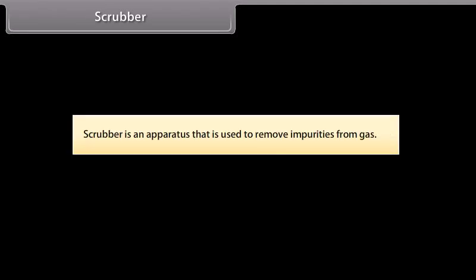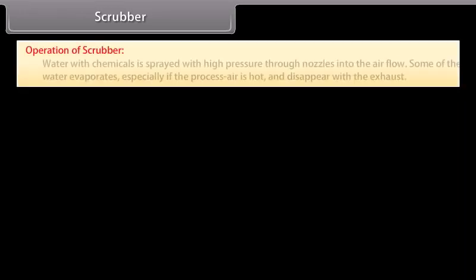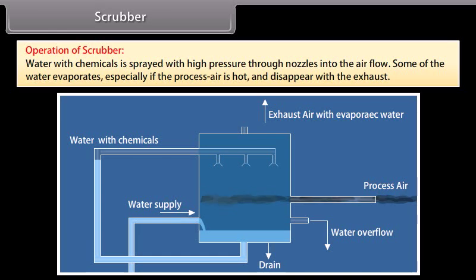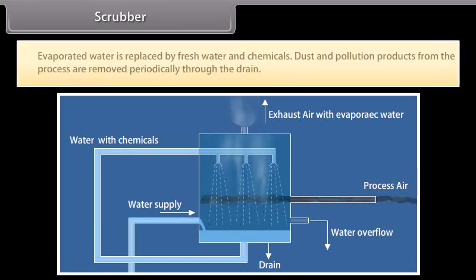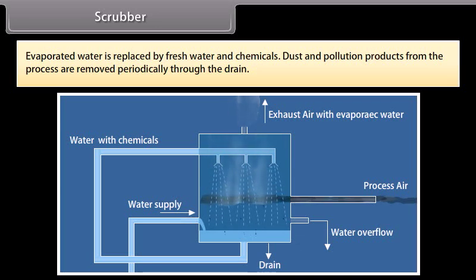A scrubber is an apparatus used to remove impurities from gas. Water with chemicals is sprayed at high pressure through nozzles into the air flow. Some of the water evaporates, especially if the process air is hot, and disappears with the exhaust. Evaporated water is replaced by fresh water and chemicals. Dust and pollution products from the process are removed periodically through the drain.